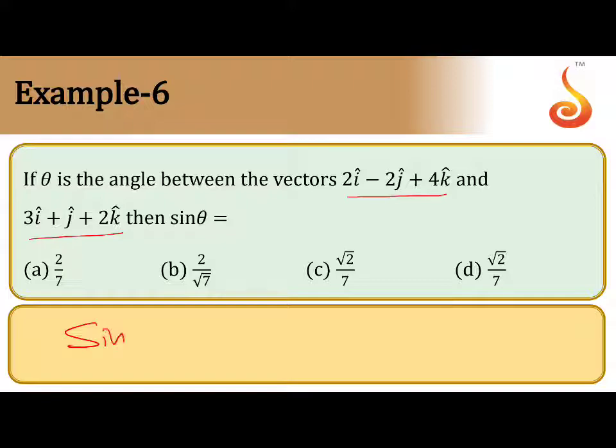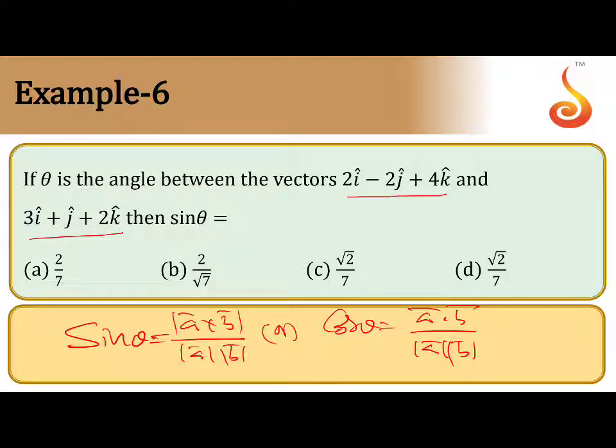So we have sin theta equal to magnitude of a cross b by magnitude of a into magnitude of b. Or you can take cos theta equal to a dot b by magnitude of a into magnitude of b.